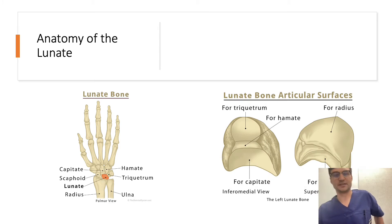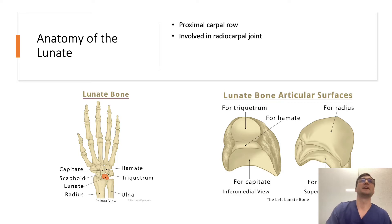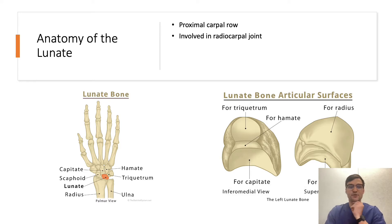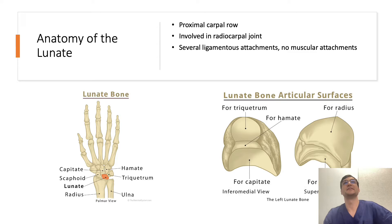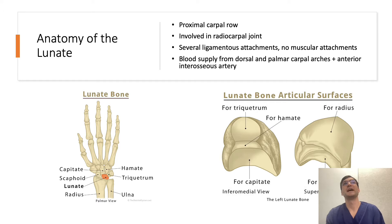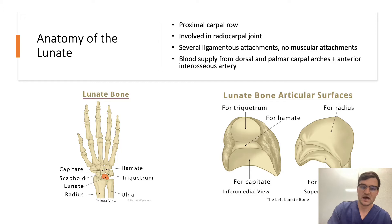Just a little background to get us started. The anatomy of the lunate — it's one of the proximal carpal bones. It articulates in the radiocarpal joint and it gets its name from the Latin 'luna' because it's got a little crescent moon shape, which you can see on imaging. It articulates with several other carpal bones and has several ligamentous attachments, however has no muscular attachments. It gets its blood supply similar to the other carpal bones from both the dorsal and palmar carpal arches, as well as the deep penetrating branches of the anterior interosseous artery in most patients.